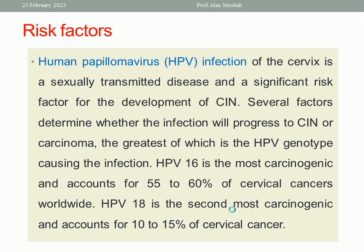Also, in immunocompromised state, HIV infection, smoking, and multiple sexual partners are considered additional risk factors with possibility of sexually transmitted disease. HPV type 16 is the most carcinogenic and accounts for up to 60% of cervical cancer worldwide, while HPV type 18 is the second most carcinogenic and accounts for 10 to 15% of cervical cancer.